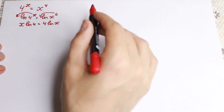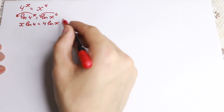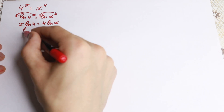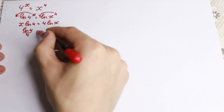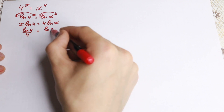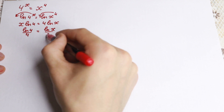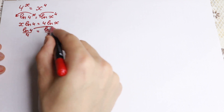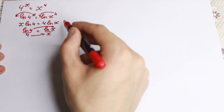Now, a quick step: let's divide both sides by 4 and by x. We get ln(4)/4 = ln(x)/x. The left and right sides have the same structure, so from this symmetry x equals 4 is our solution.